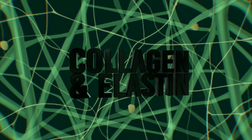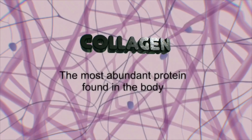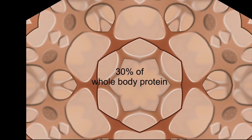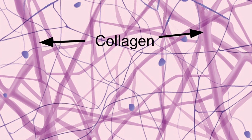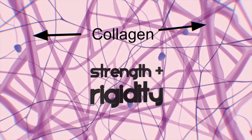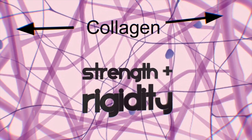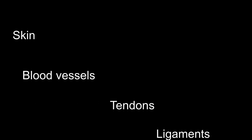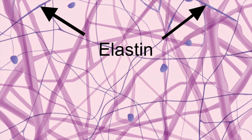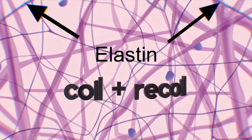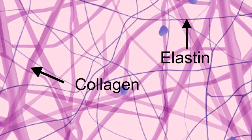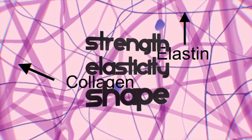Now let's discuss collagen and elastin. Collagen is the most abundant protein found in the body, accounting for around 30% of whole body protein. It's the main component in connective tissue, such as cartilage, tendons, ligaments, and blood vessels. Composed of very strong fibers, collagen is responsible for giving the skin its strength and rigidity. Elastin is also a protein found in our skin and connective tissue that accounts for the elasticity of structures in the skin, blood vessels, tendons, ligaments, and more. It is less abundant than collagen, but elastin gives the skin its elastic property, allowing it to coil and recoil back to its original shape after being stretched. Together, collagen and elastin are two key proteins that give the skin its strength, elasticity, and shape.